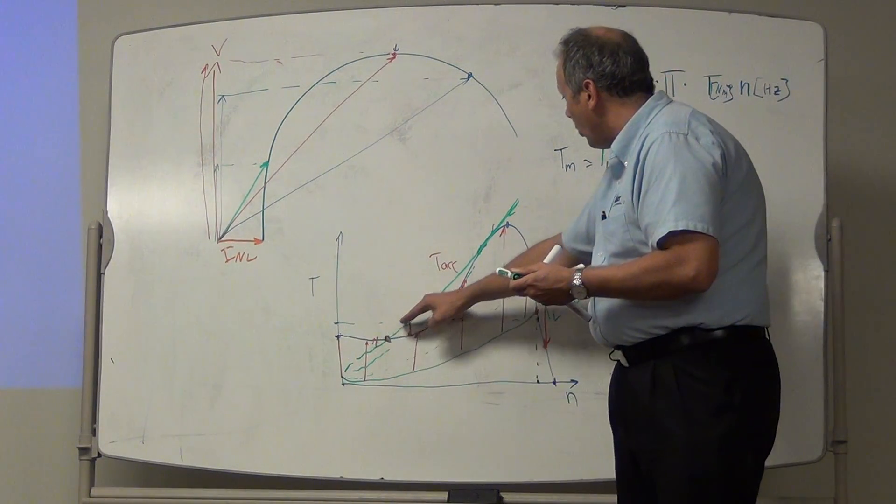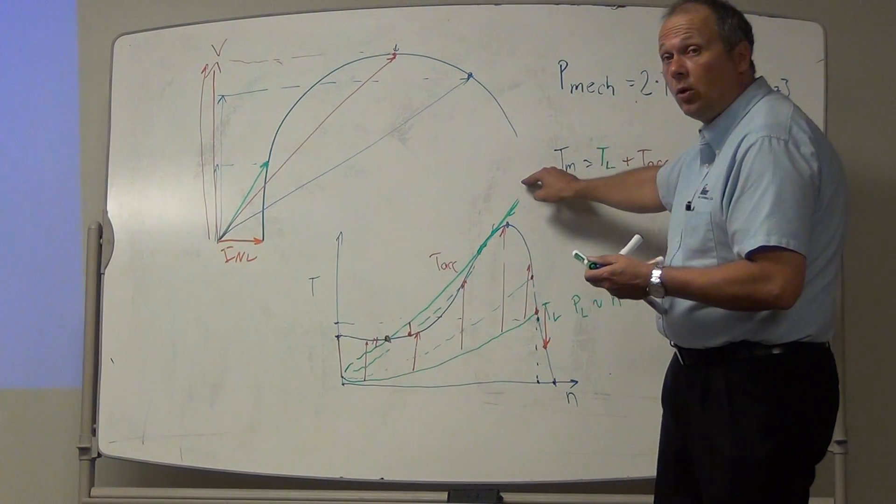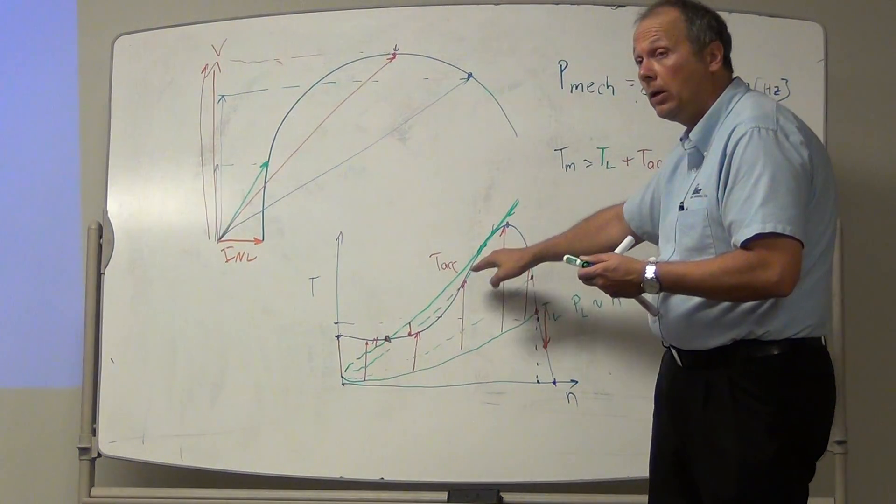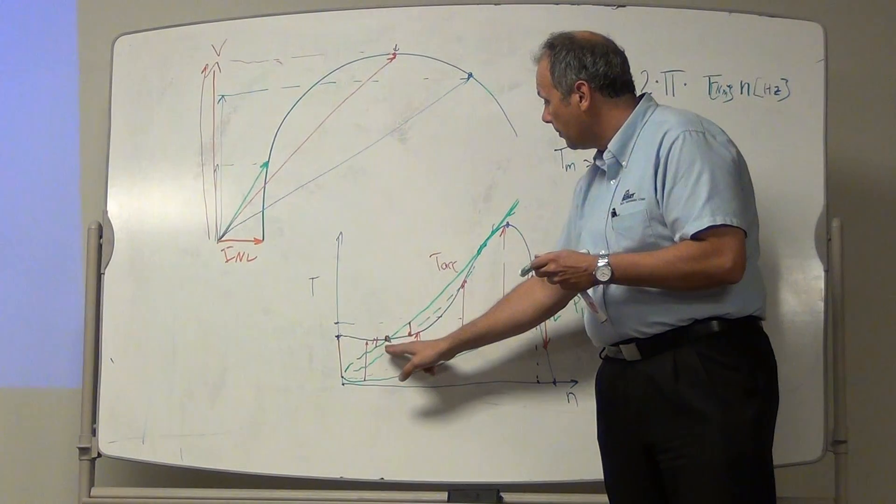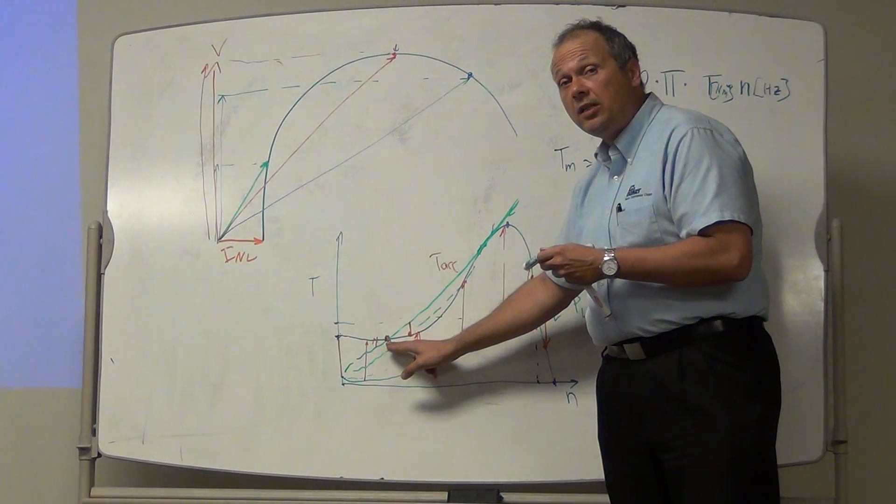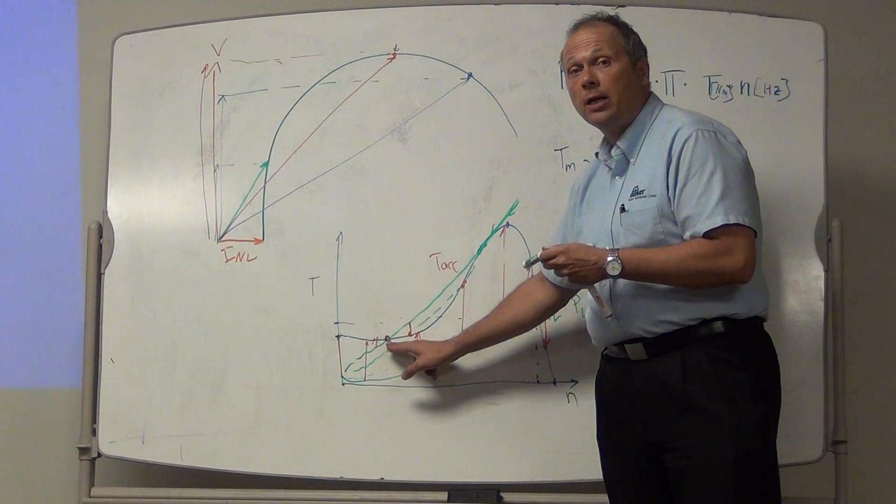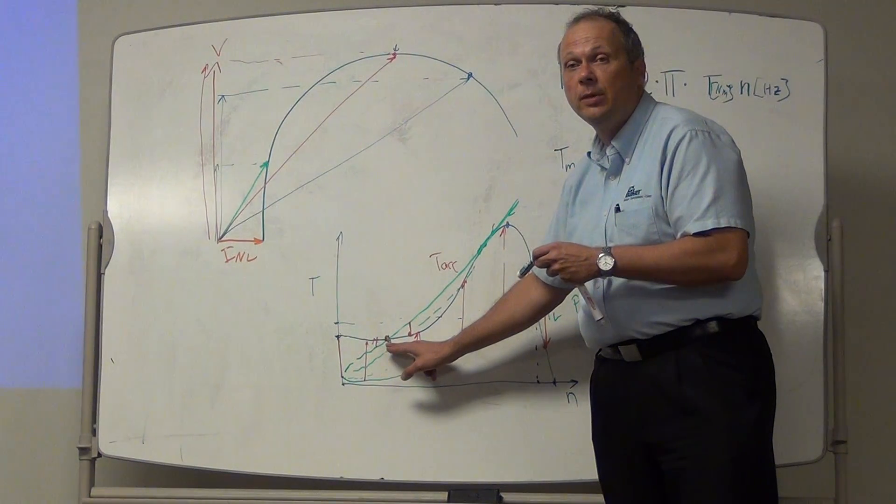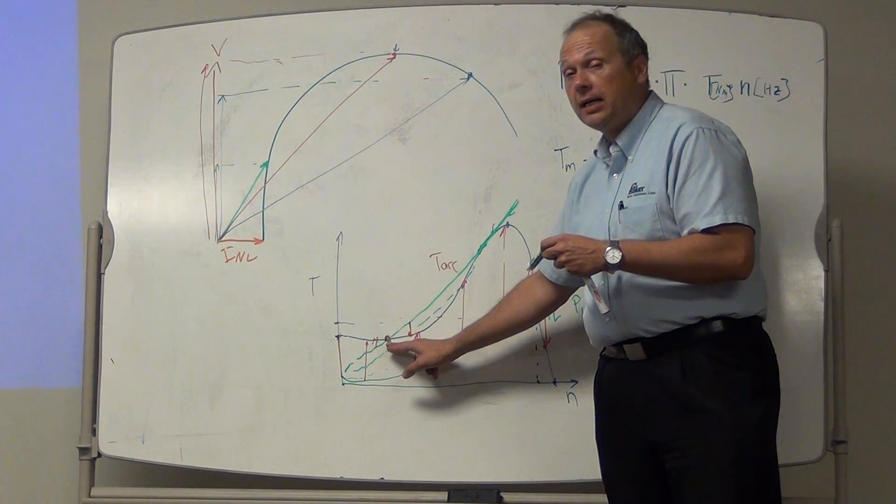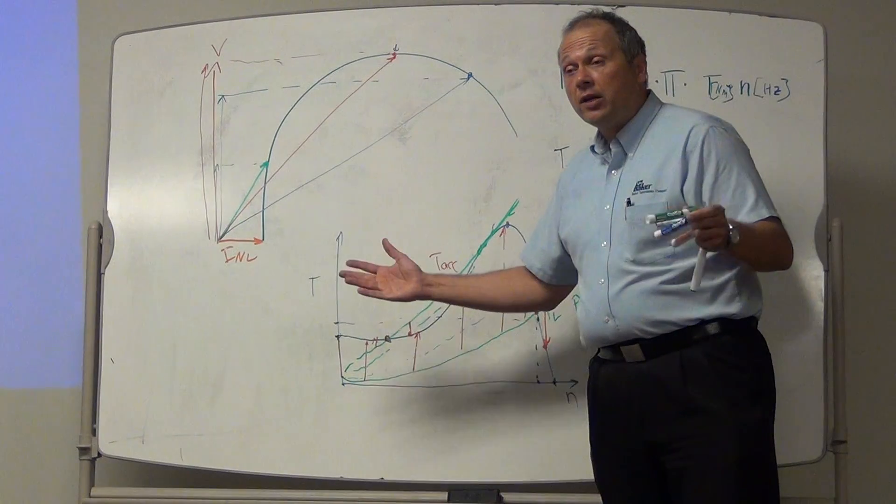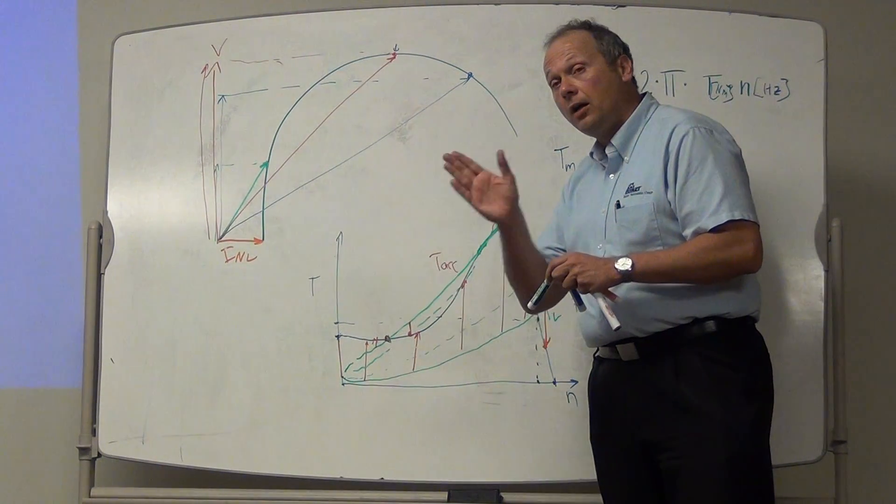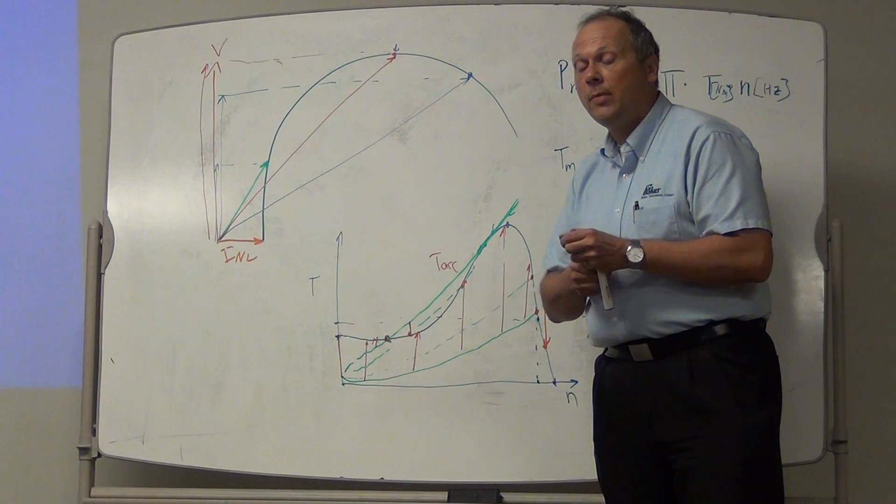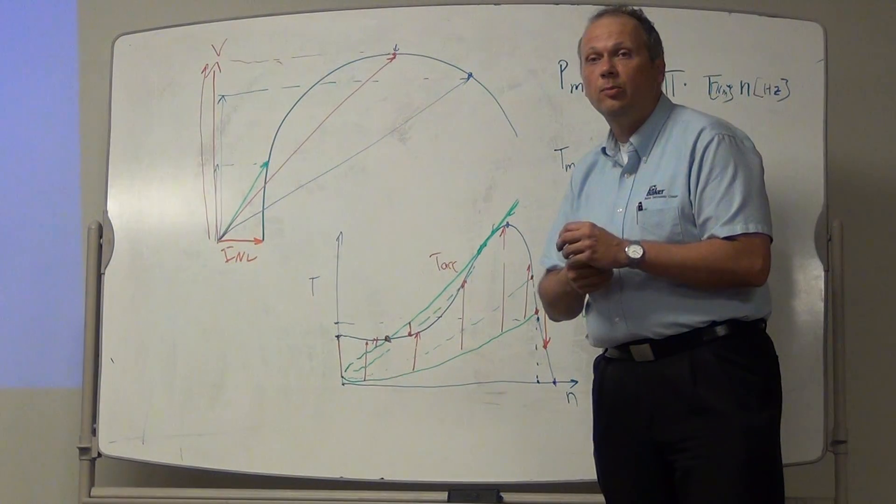So this is a stable operating point, whereas as soon as my torque is higher, the load torque is higher than my motor, I'm just going to be drawing down to this point right here. At this speed, the motor burns up really quick. It's a matter of very few minutes. On a die cast motor, the aluminum is going to melt. And on a copper bar motor, the steel insulation is going to burn.